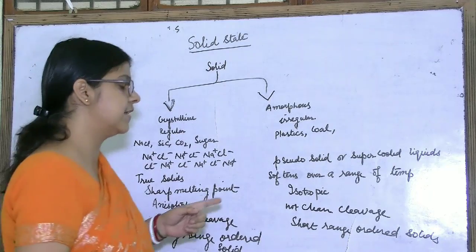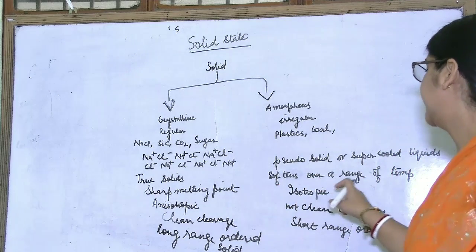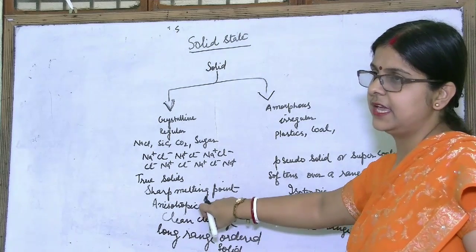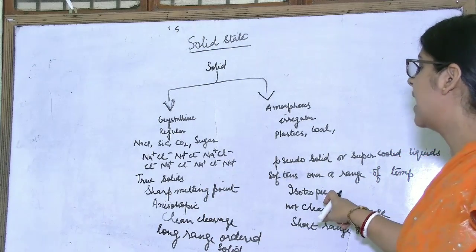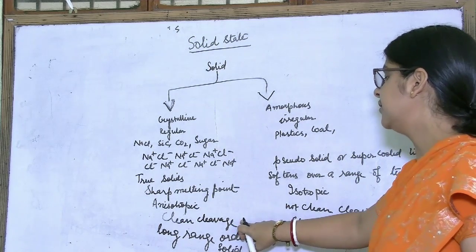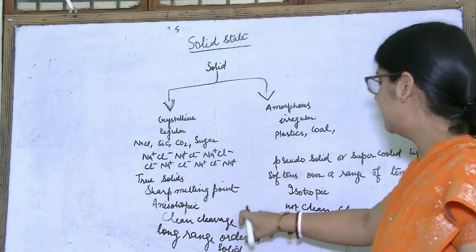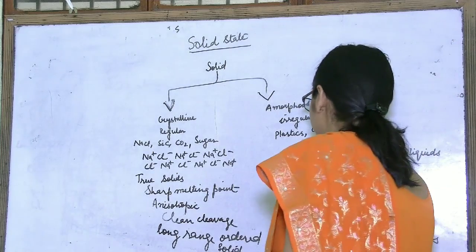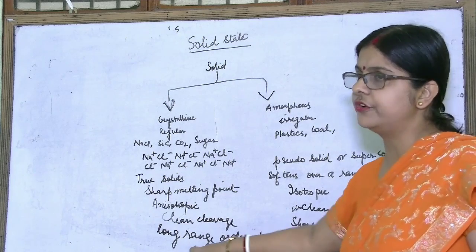Crystalline solids have a sharp melting point, whereas amorphous solids get softened over a range of temperature. Crystalline solids are anisotropic — they have different physical properties in different directions — while amorphous solids are isotropic. When cutting with a sharp edge tool, crystalline solids give a clean cleavage, while amorphous solids do not. Crystalline solids are long range ordered solids; amorphous solids are short range ordered solids.